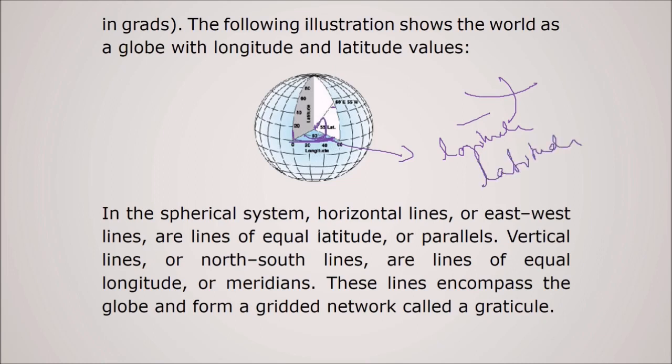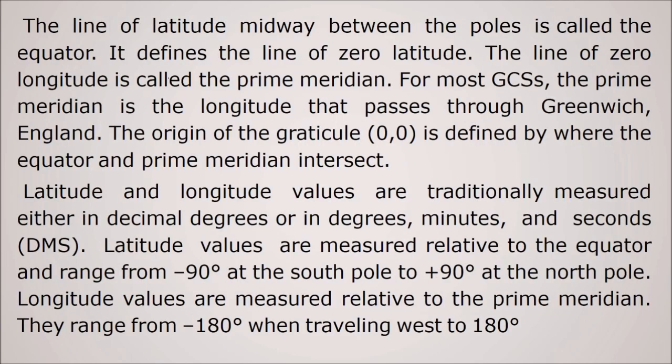So in a spherical system, horizontal lines or east-west lines or lines of equal latitudes are called parallels. So these are parallels. Vertical lines, these are north-south lines. These are lines of equal longitude or meridians we call it. These lines encompass the globe and form a gridded network called the graticule. So the line of latitude midway between the poles is called the equator. It defines the line of zero latitude. Here the latitude is zero.